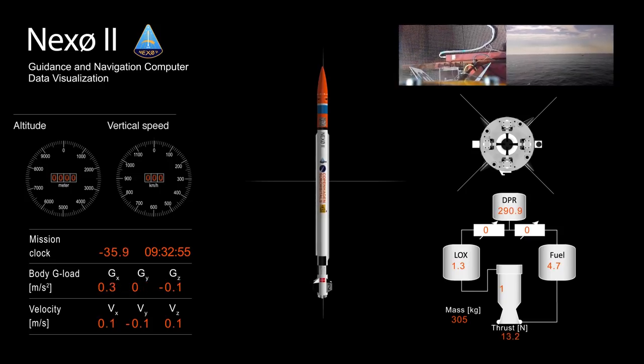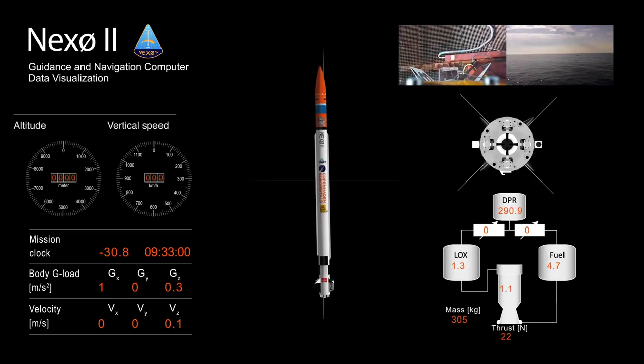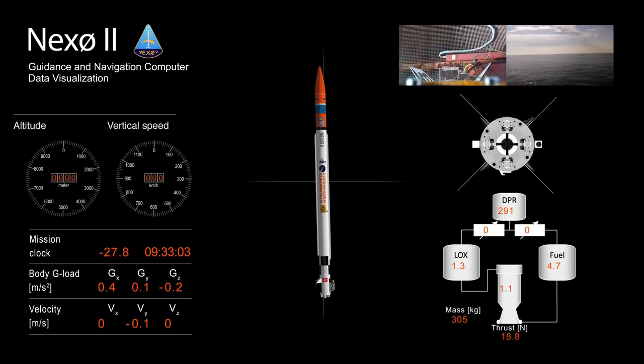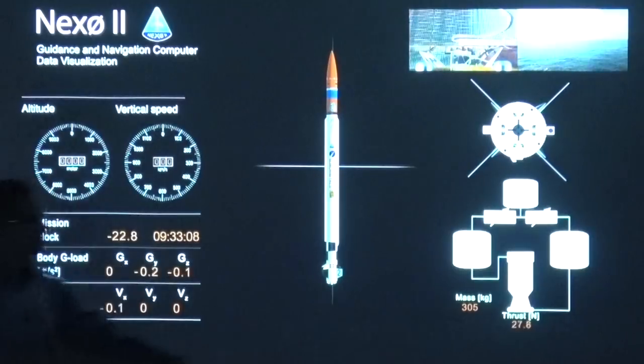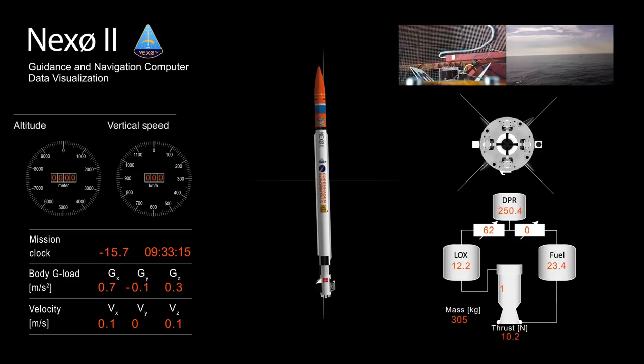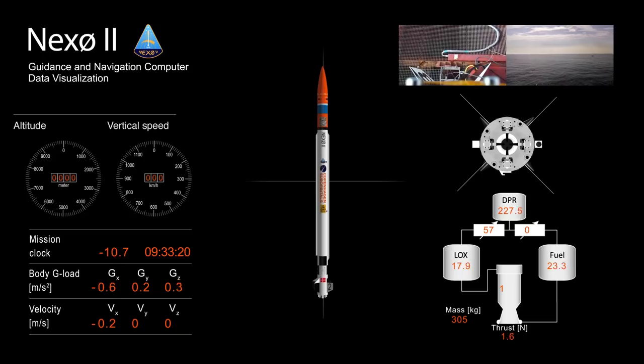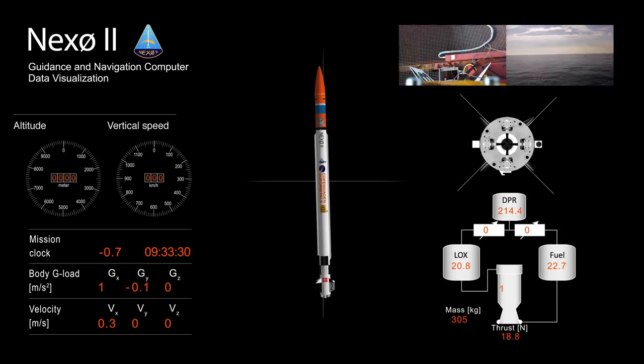We are going for launch. Auto sequence start in 5, 4, 3, 2, 1. T minus 30 seconds and counting. In 5 seconds you can see the pressure's going up. 20 seconds. Tanks pressurizing. Fuel tank at flight pressure. T minus 10 seconds. LOX tank at flight pressure. 5, 4, 3, 2, 1. Ignition.